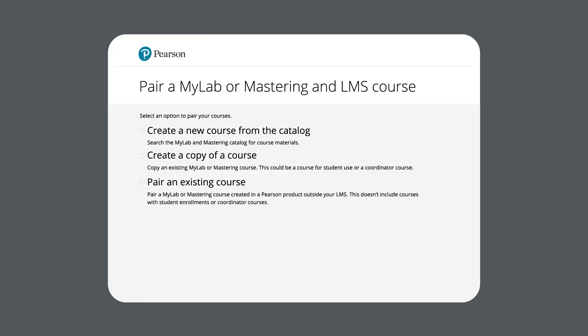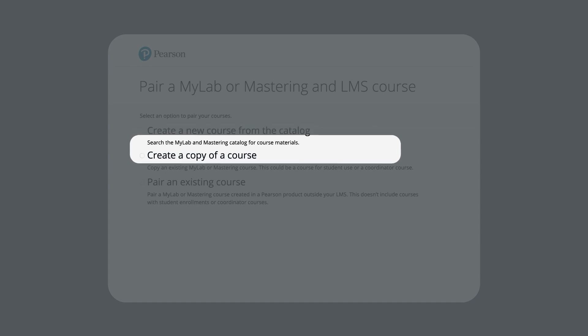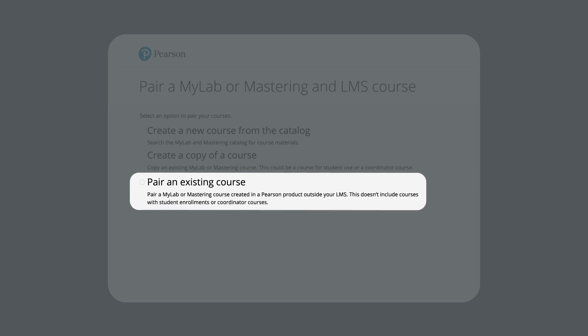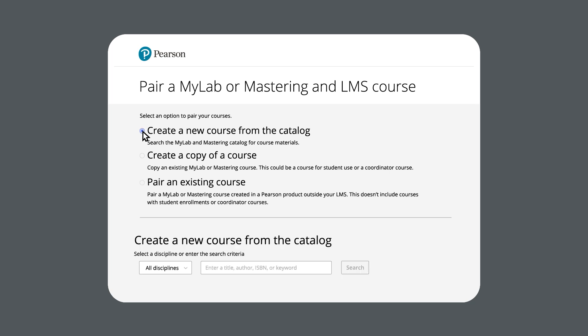You have a few options for linking your MyLab or Mastering and LMS courses. You can search the catalog to create and link a new MyLab or Mastering course, or you can link a copy of an existing course you used in the past. You may also have the option to link to an existing course that was created in a Pearson product outside your LMS. This does not currently include courses with student enrollments or coordinator courses. In this example, we'll go ahead and create a new course from the catalog.